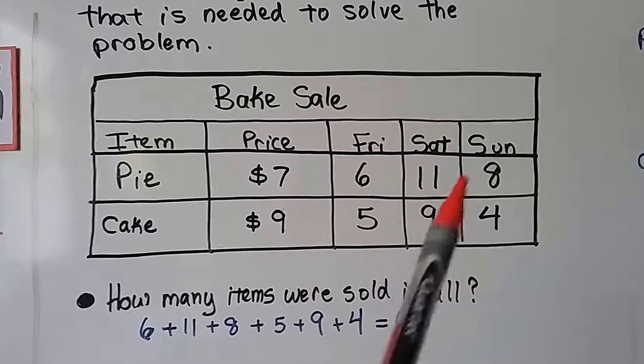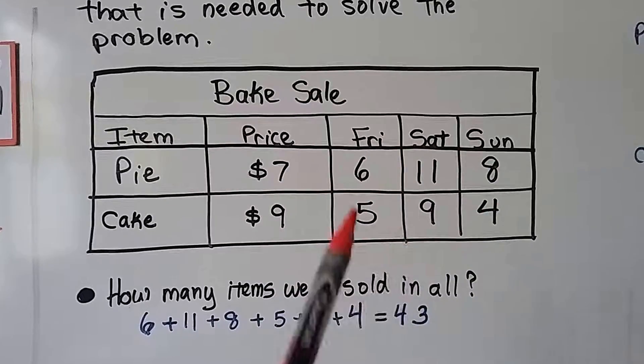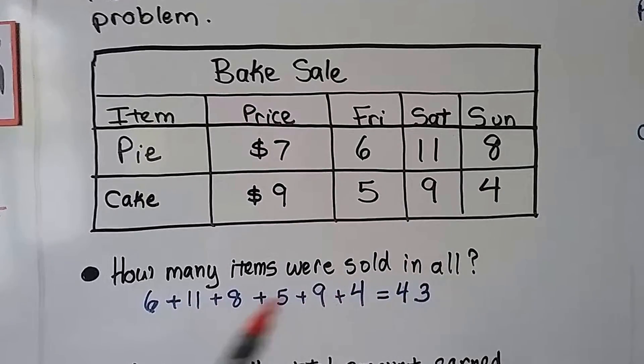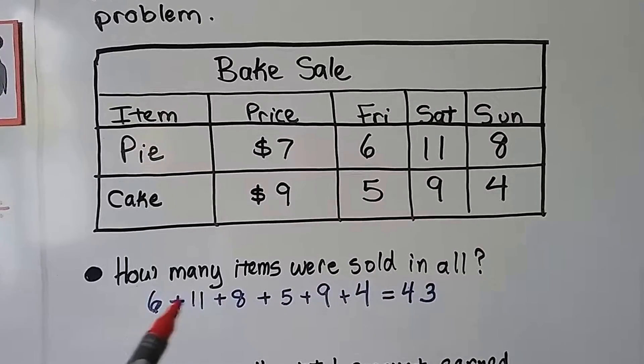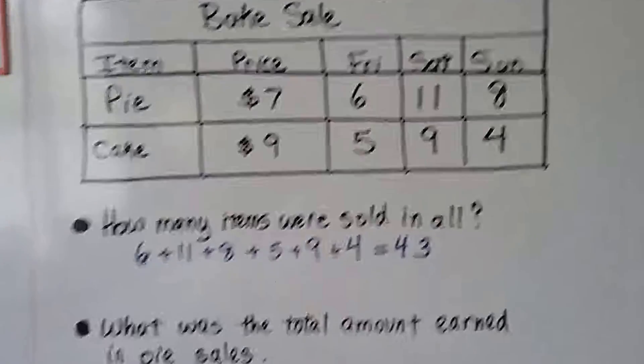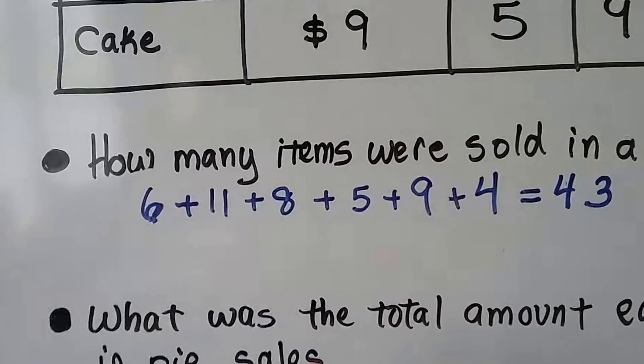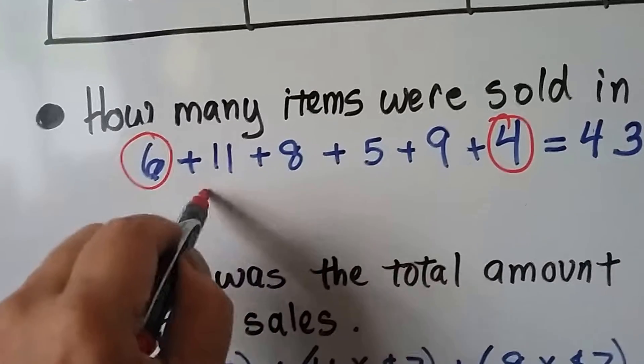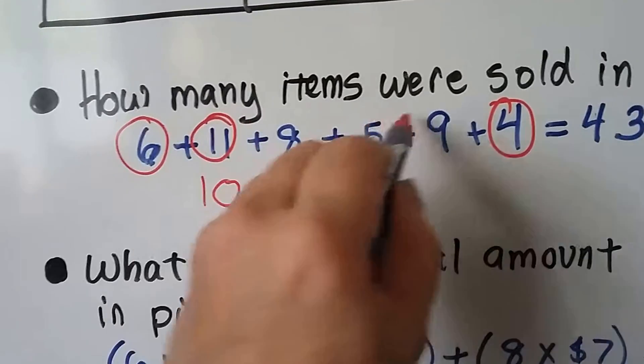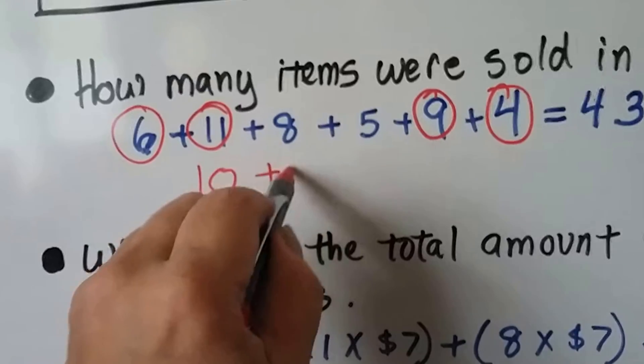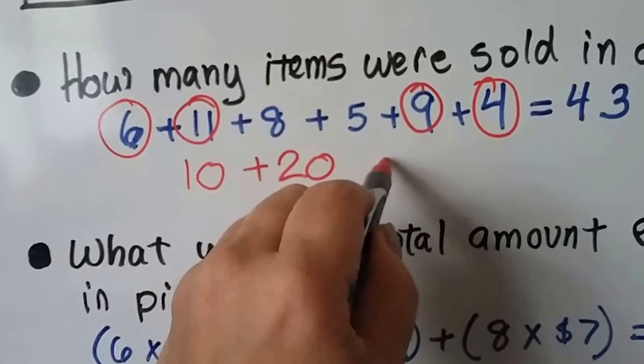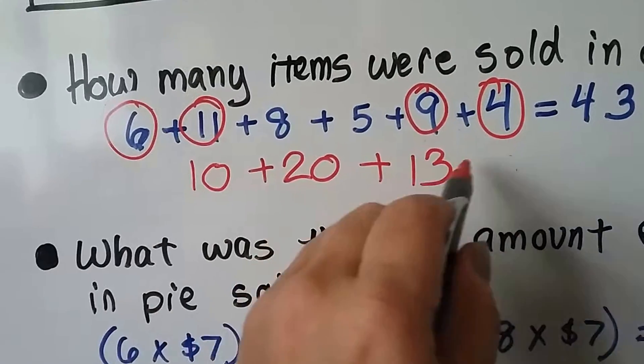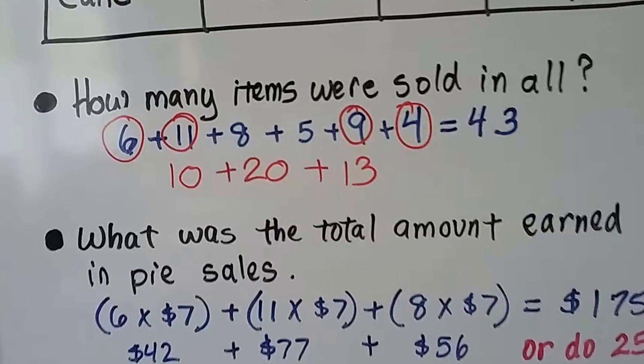Here's all the sales. We need to total all of these up. That means we're going to make an addition equation. You can actually do this pretty quick mentally. If you look for compatible numbers, we have a 6 and a 4, that's a 10. We have an 11 and a 9, that makes a 20. Then we have a 13, 8 and 5. 10 and 20 is 30, 43. We can do it very quickly.